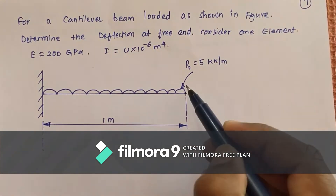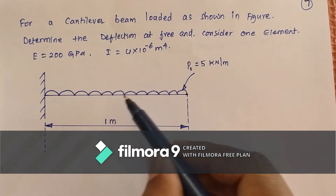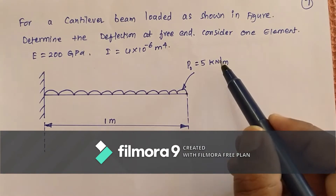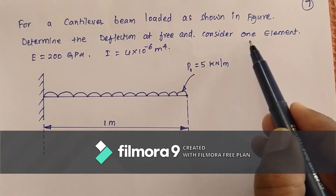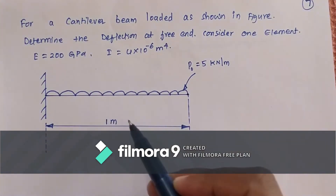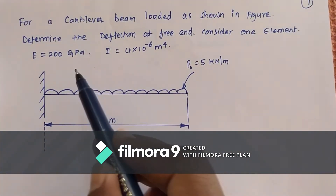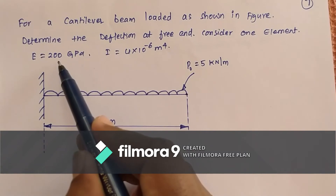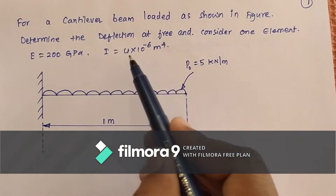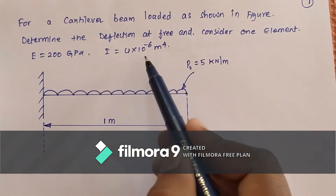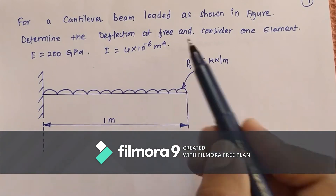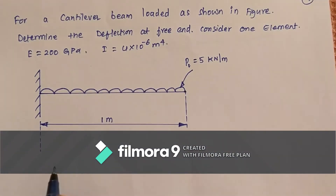This is a free end. It is a UDL with load 5 kN per meter. Consider one element — we have to consider this entire structure as one element. The given elastic modulus is 200 GPa and moment of inertia is 4 × 10⁻⁶ m⁴.